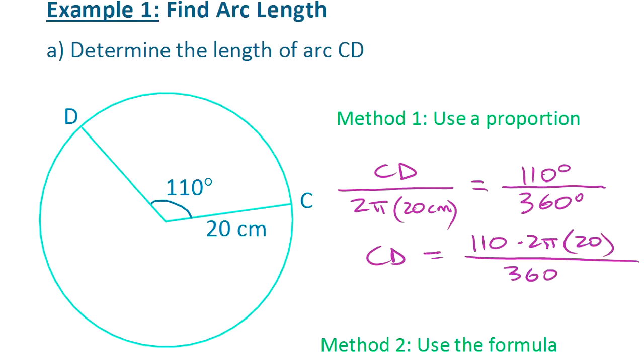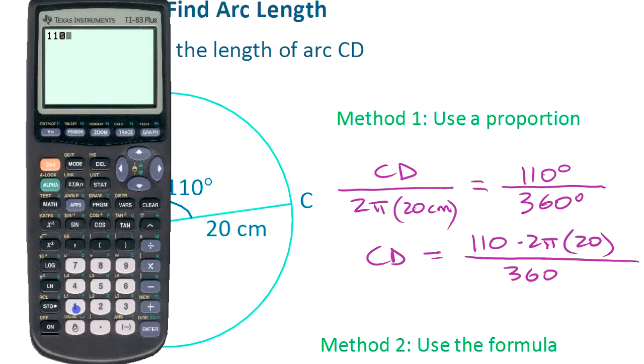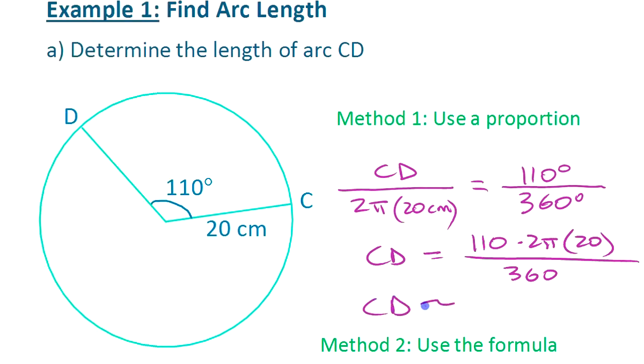Let's get a calculator in here. 110 times 2 times π times 20 divided by 360—that's going to give me 38.4, depending on what kind of accuracy you want. CD is roughly 38.4, and it would be centimeters because that unit was centimeters.